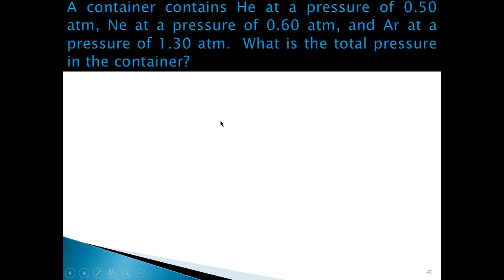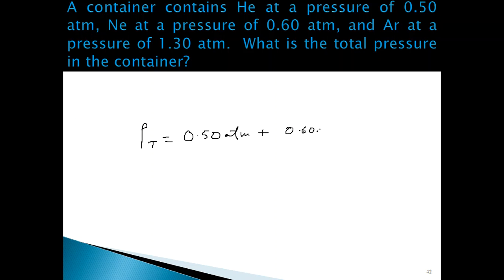We can use that law to solve a problem like this. A container contains helium at 0.50 atmospheres, neon at 0.60 atmospheres, and argon at 1.30 atmospheres. What is the total pressure? The total pressure is given by P_total equals 0.50 atmospheres plus 0.60 atmospheres plus 1.30 atmospheres. All you have to do is add these up, and the answer is 2.40 atmospheres.